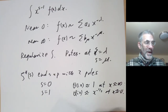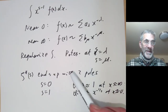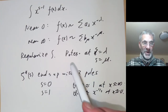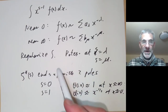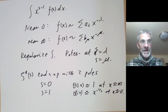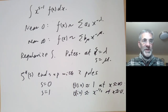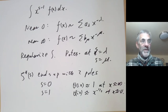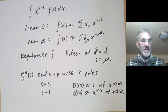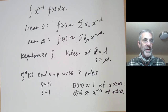That's done the theta function of a one-dimensional lattice. In the next lecture we're going to look at theta functions of high-dimensional lattices, which will give us examples of theta functions that are modular forms for the whole of SL2(Z), not just for this funny index-3 subgroup.